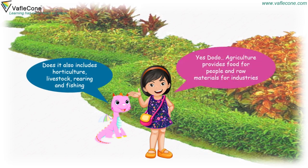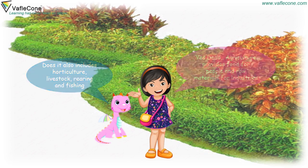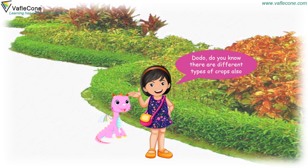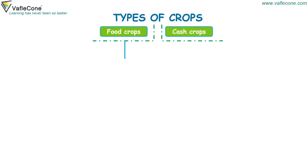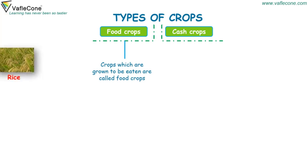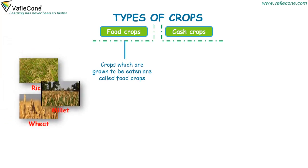Agriculture provides food for people and raw materials for industries. Dodo, do you know there are different types of crops also? Let's discuss. There are two types of crops: food crops and cash crops. Crops which are grown to be eaten are called food crops. For example, rice, wheat, millet and pulses.